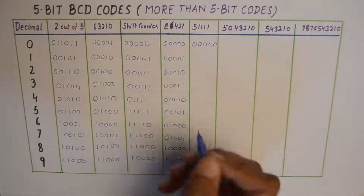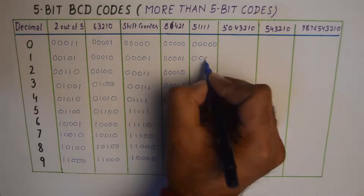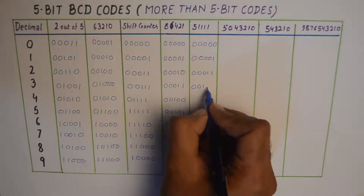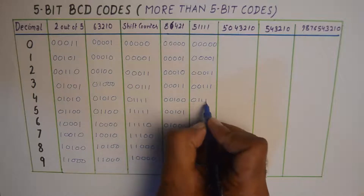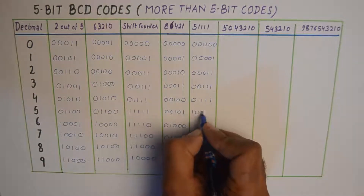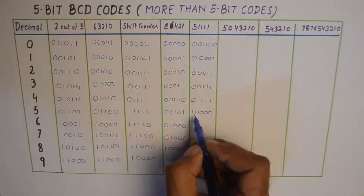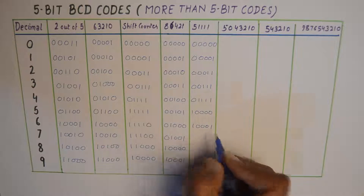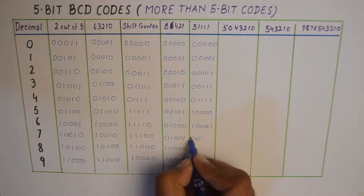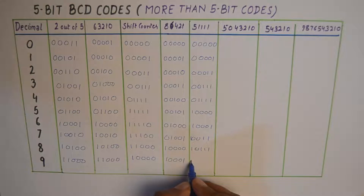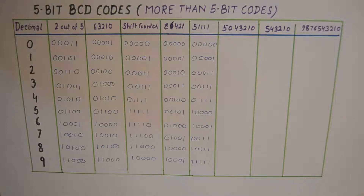Then we have the 5-1-1-1-1 code. 0 is represented as five zeros. 1, 2, 3, 4 each add a 1 bit progressively. 5 has a 1 placed at the 5's position. 6, 7, 8 continue adding bits, and 9 will have all 1s adding up to 9.